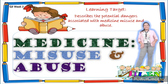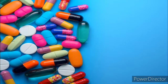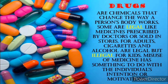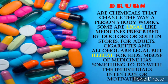So let's start. Before anything else, I will discuss first the definition of drugs. Drugs are chemicals that change the way a person's body works. Some are legal, like medicines prescribed by doctors or sold in stores for adults. Cigarettes and alcohol are legal drugs, but they are illegal for kids. It is also illegal and dangerous for kids to abuse medicines or use drugs like marijuana or cocaine.